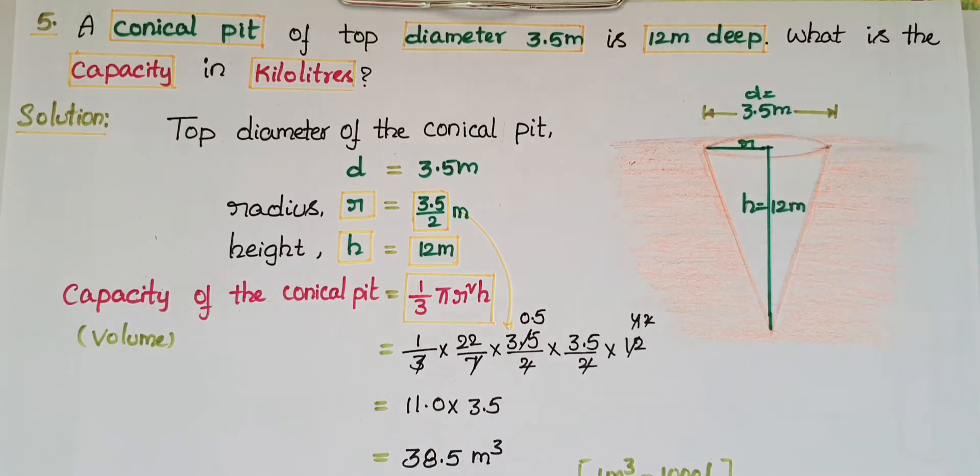Hello everyone. Today I'm going to solve the fifth problem from Exercise 13.7 on Surface Areas and Volumes from NCERT Class 9. A conical pit of top diameter 3.5 meters is 12 meters deep. What is the capacity in kiloliters?